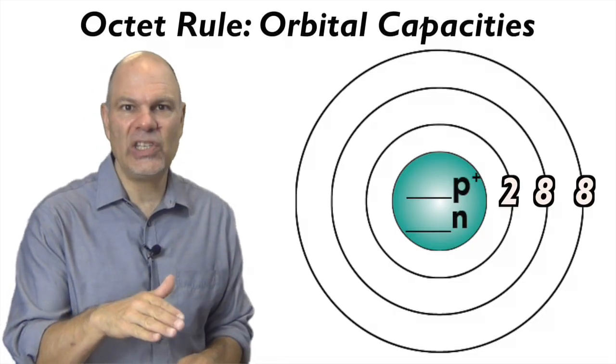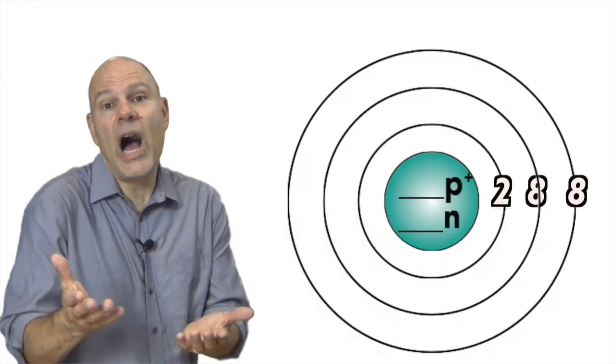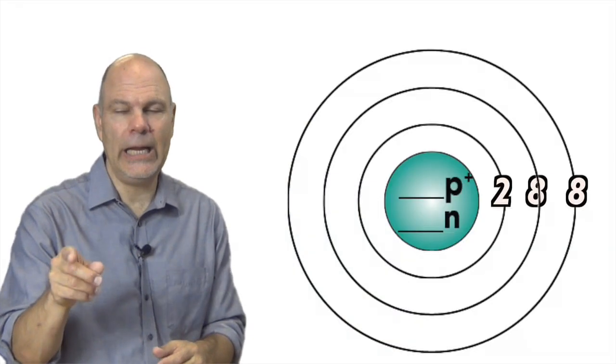You fill these orbitals from the inside out. Note that this rule only applies for the first few rows of the periodic table, but what's great is that in biology, almost all the important elements are found in those same few first rows. So, octet rule: two, eight, and eight.